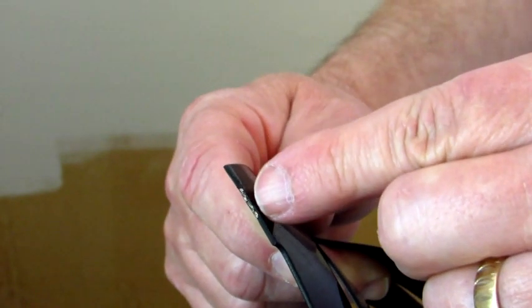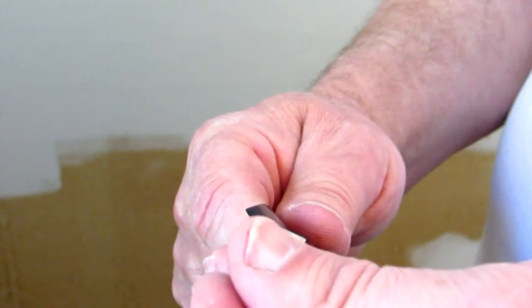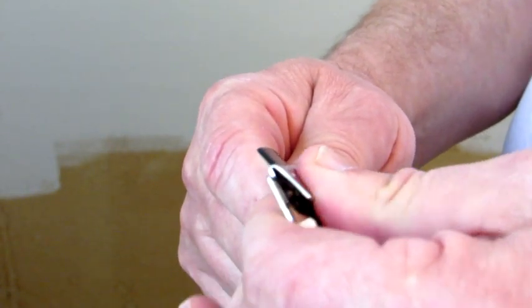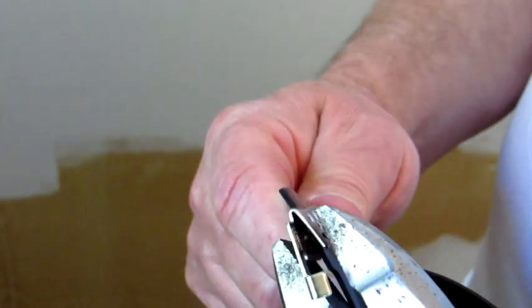Locate the bus braid running down each side of the element. It's very important you position the clip directly over the bus braid. Secure the clip using a pair of pliers.